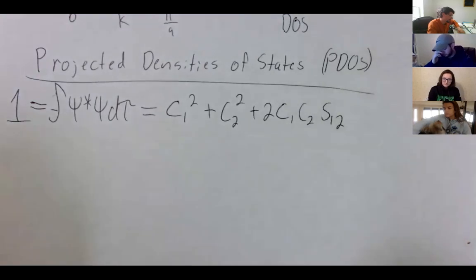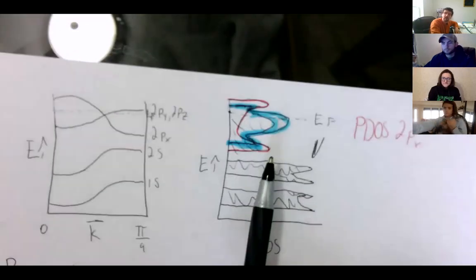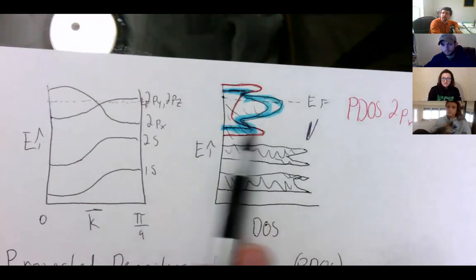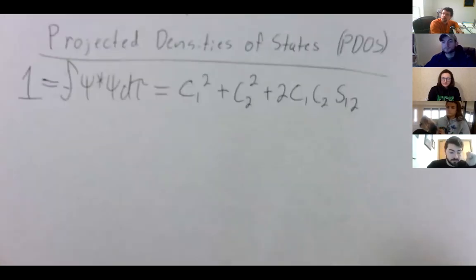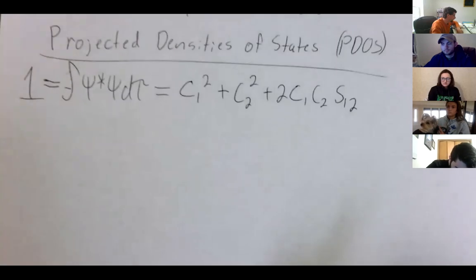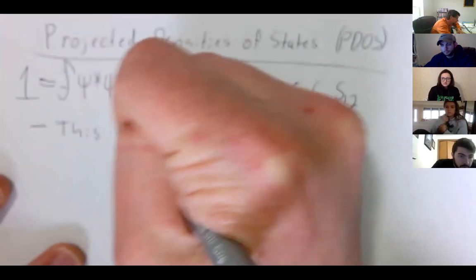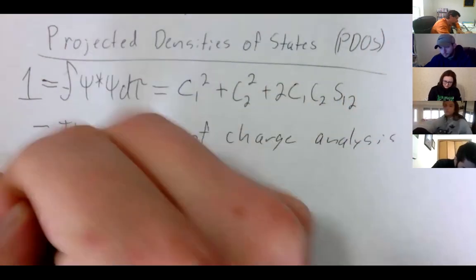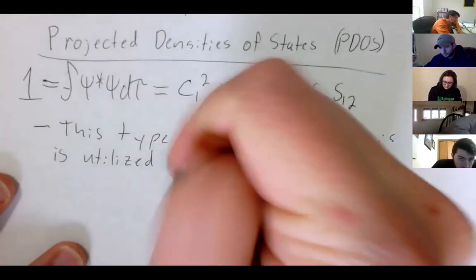How does this relate to the projected densities of states? Just like we discussed, we want to tease out individual orbital contributions — like where the px or py is — to the total projected densities of states. This charge analysis is utilized in the PDOS as it is applied to the total DOS.